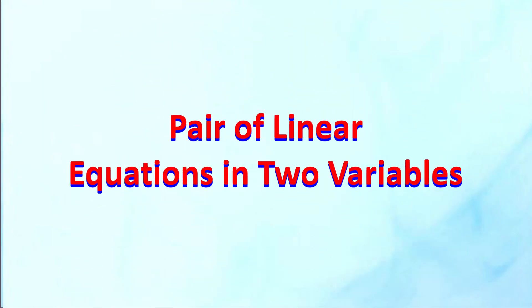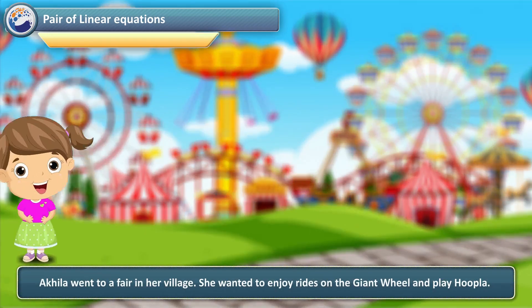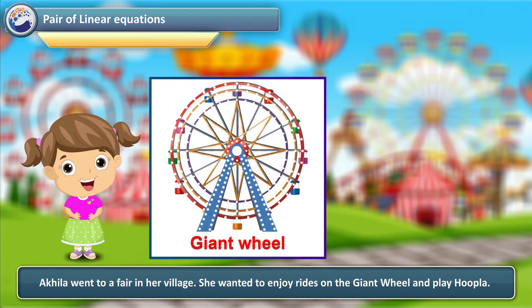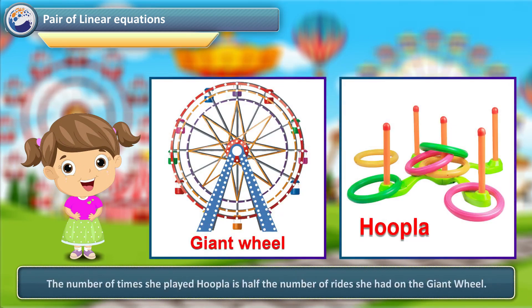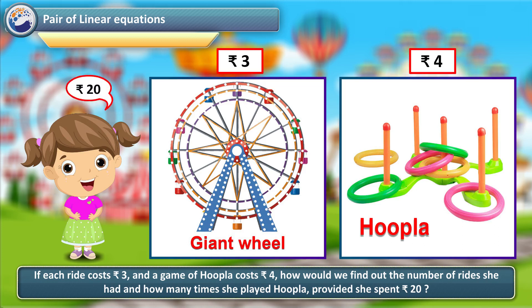Pair of Linear Equations in Two Variables. Akhila went to a fair in her village. She wanted to enjoy rides on the giant wheel and play hoopla. The number of times she played hoopla is half the number of rides she had on the giant wheel. If each ride costs rupees 3 and a game of hoopla costs rupees 4, how would we find out the number of rides she had and how many times she played hoopla, provided she spent rupees 20?